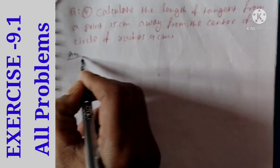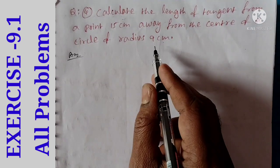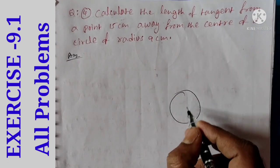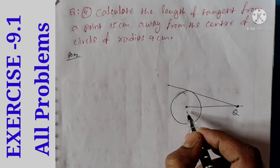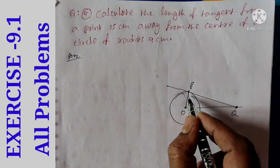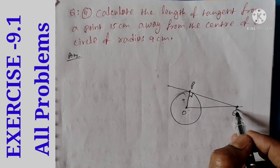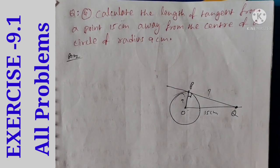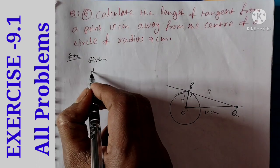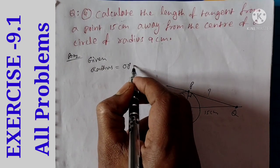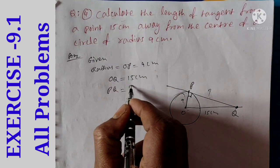Question number 4: calculate the length of the tangent from a point 15 cm away from the center of the circle, where the radius is 9 cm. This is the circle with center O. This is Q point, this is O, this is P. OP is the radius — radius is always perpendicular to the tangent. Radius is 9 cm and distance OQ is 15 cm. So this is the length of the tangent. Radius OP is equal to 9 cm and distance OQ is equal to 15 cm. Find PQ.